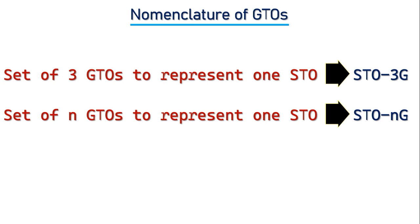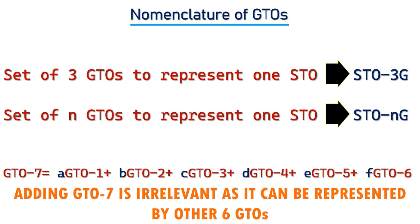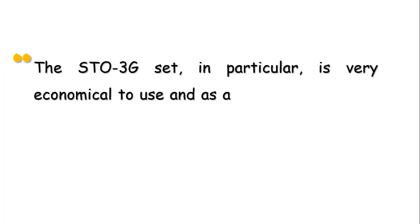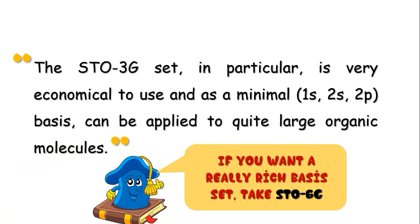There does come a point where the Gaussians become linearly dependent, and adding more functions is no longer useful. In that 1969 paper, they specifically said the STO-3G basis in particular is very economical to use and as a minimal basis — that is, 1s, 2s, and 2p — can be applied to quite large organic molecules. However, STO-6G is so greatly efficient that we can really rely upon it and stop adding any more Gaussians.